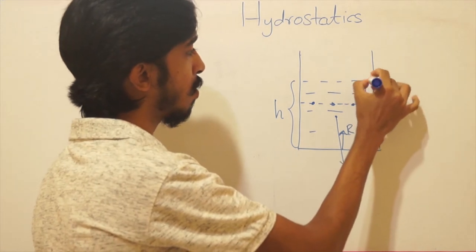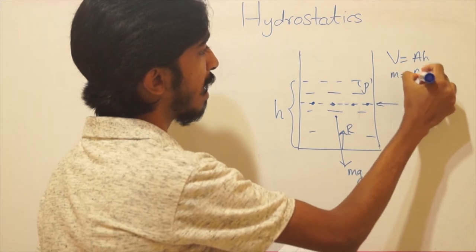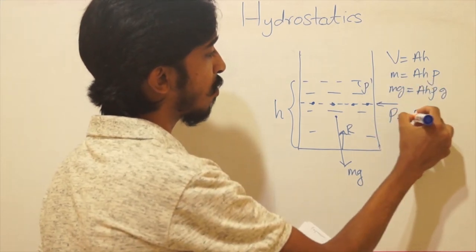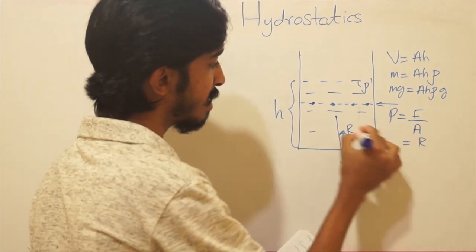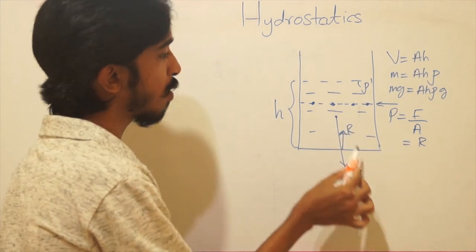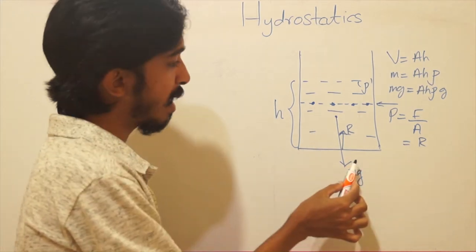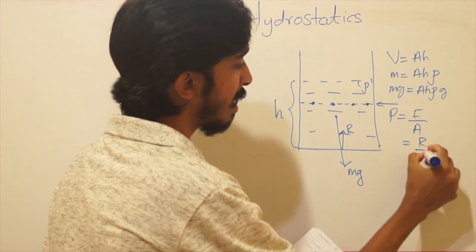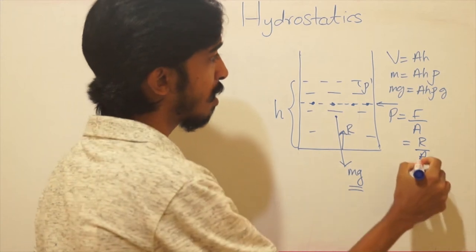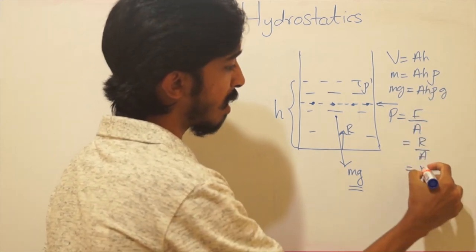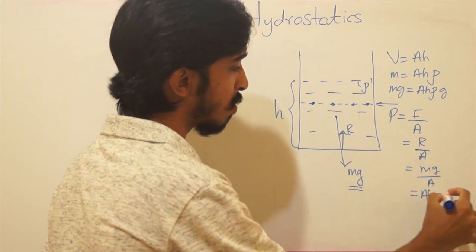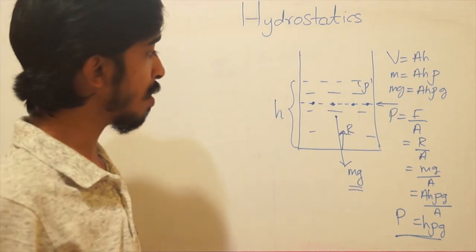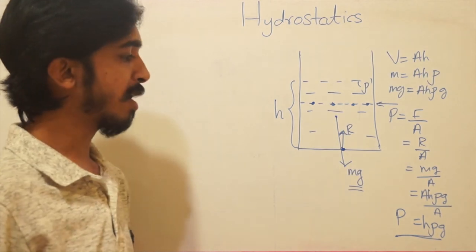Taking density as ρ, the volume is A×h, so mass = Ahρ, and mg = Ahρg. Pressure equals force over area; the force on the base is R. By Newton's third law R acts on the liquid from the base, and from equilibrium R = mg = Ahρg. So pressure P = R/A = hρg. This proves that the pressure at any point equals h×ρ×g — the height times density of the liquid times gravitational acceleration.